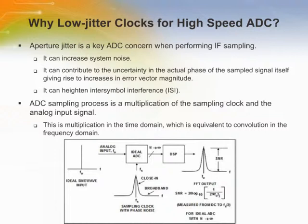Sampling clocks are more often specified in terms of phase noise rather than time jitter. In system designs requiring low jitter sampling clocks, the cost of low-noise dedicated crystal oscillators is generally prohibitive. An alternate solution is to use a Phase Lock Loop in conjunction with a Voltage-Controlled Oscillator to clean up a noisy system clock.